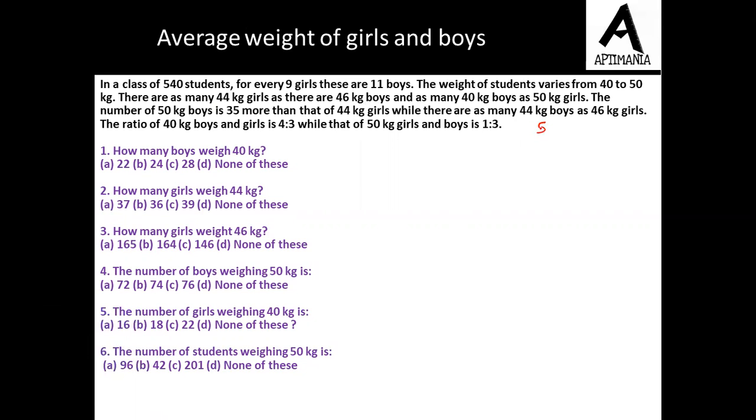So there are total 540 students, out of which the ratio of girls and boys is 9 ratio 11. So if we simplify and distribute, we'll get the number of girls as 243 and boys as 297. I have simply distributed this 540 in 9 ratio 11.